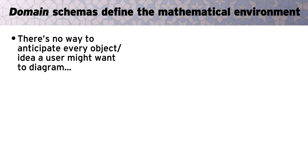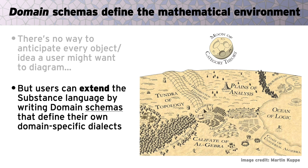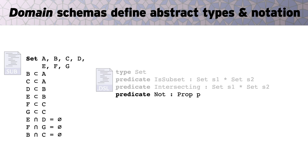We can't anticipate every object or idea a user might want to diagram ahead of time. It's a wide world of mathematics. So we let users write so-called domain schemas tailored to a given domain. For instance, for this set theory program, we have a simple domain schema behind the scenes that models the available mathematical objects and relationships, plus any custom notation. For instance, this line, type set says that we can work with sets, this line, predicate is subset defines a relationship between two sets, and so on.